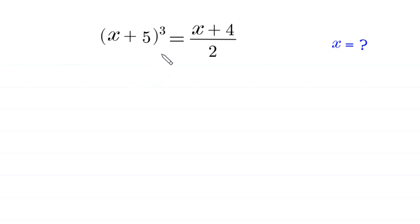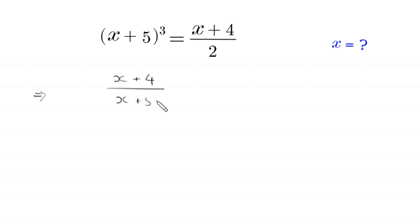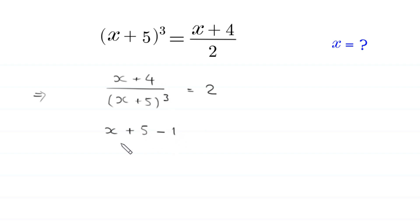If we multiply both sides by 2 and divide both sides by (x + 5)³, this implies that (x + 4) divided by (x + 5)³ is equal to 2. Next, x + 4 can be written as x + 5 − 1, so (x + 5 − 1) divided by (x + 5)³ is equal to 2.